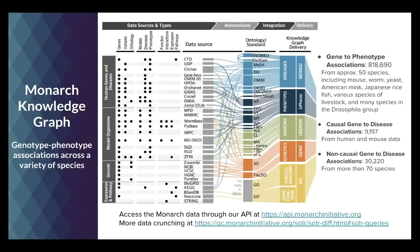For bioinformatics fans: all information about anatomy, phenotypes, cross-species data, genotype-phenotype associations, and phenotype-disease associations is integrated into a knowledge graph. We have gene-to-phenotype associations from over 50 species — including the American mink and the platypus — and we love to collect new species. We have over 9,000 causal gene-to-disease associations and 30,000 non-causal gene-to-disease associations from more than 70 species. These data are accessible through our API, with data reports downloadable at the Monarch data link.